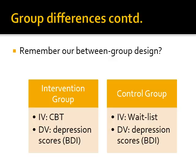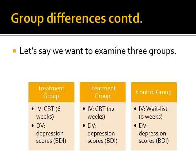So let's return to our t-test. Recall our between-group design. We had an intervention group which consisted of CBT, and a control group which was a waitlist with no CBT, with the dependent variable being depression scores on the Beck Depression Inventory. Let's say that we wanted to examine three groups rather than just two groups. So now we have a treatment group that lasts for six weeks, a treatment group that lasts for 12 weeks, and a waitlist group that lasts for zero weeks, with the dependent variable being depression scores on the Beck Depression Inventory.